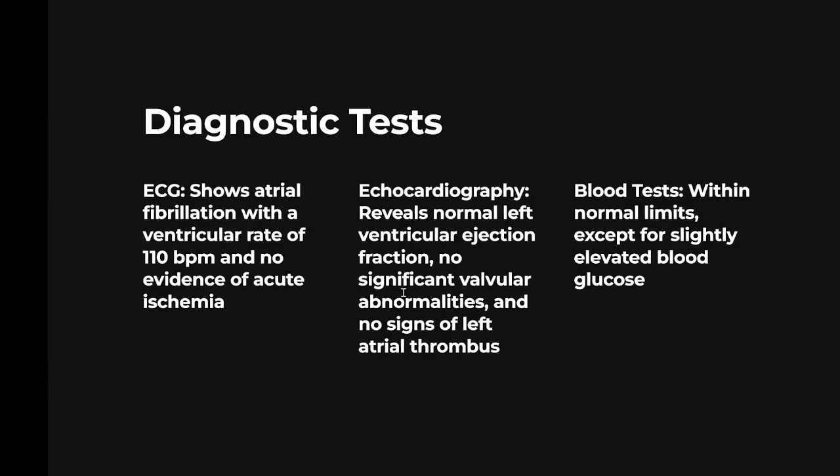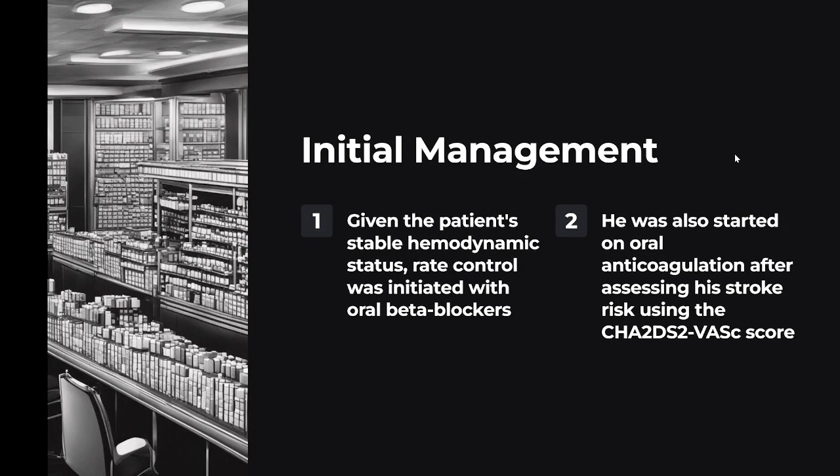ECG shows atrial fibrillation with a ventricular rate of 110 BPM and no evidence of acute ischemia. Echocardiography reveals normal left ventricular ejection fraction, no significant valvular abnormalities, and no signs of left atrial thrombus. Blood tests within normal limits except for slightly elevated blood glucose. Initial management: rate control was initiated with oral beta blockers, and oral anticoagulation was started after assessing stroke risk using the CHA2DS2-VASc score.